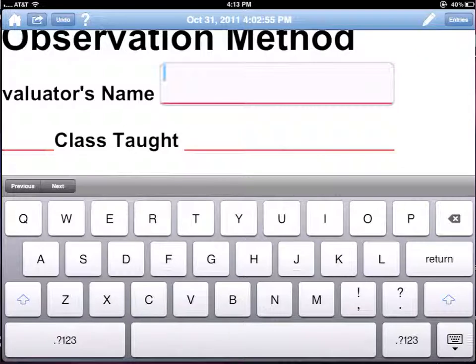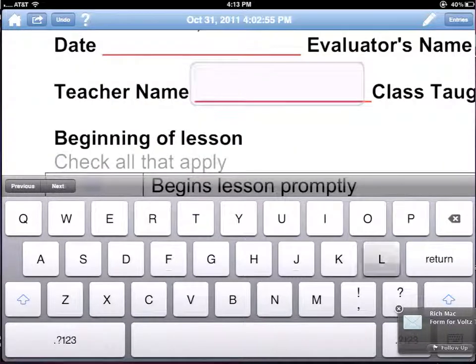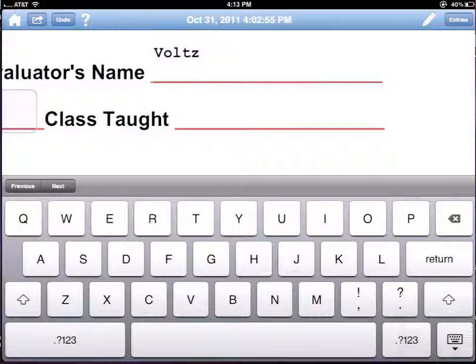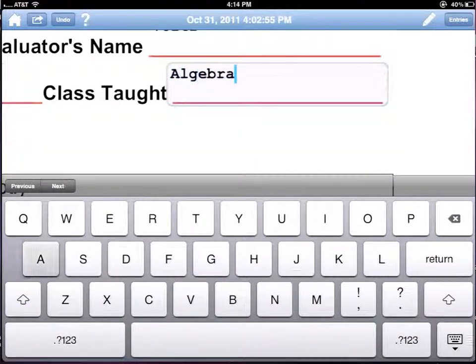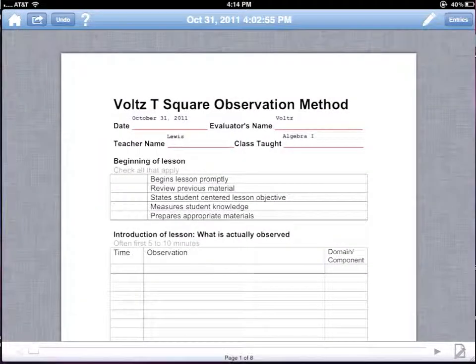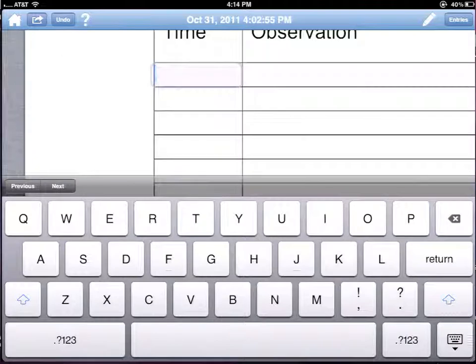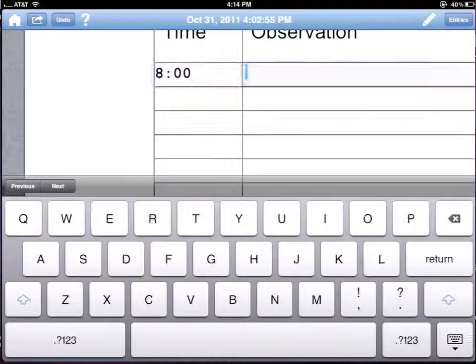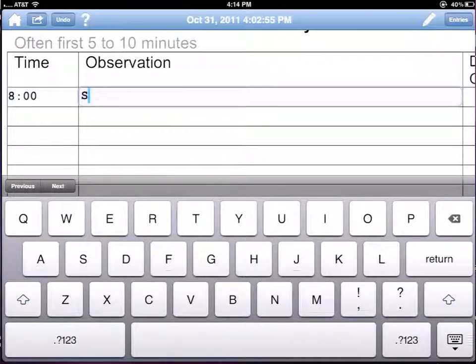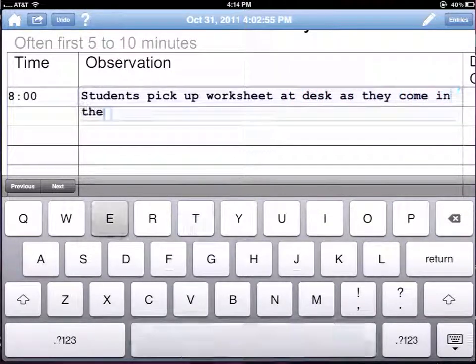Then I could go over to evaluator's name and put in my own name. Under teacher name, I would put in the name of the teacher. Under class taught, I could put the class that the teacher is teaching. Now I can get into my actual form itself.